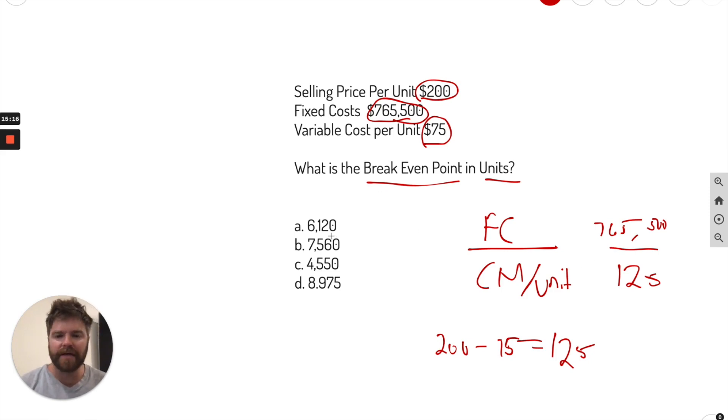And we got 6,124, which is, again, the closest number is 6,120. Let me just make sure I did that right. I had 765,500 divide it by 125. Yeah. So the closest answer is going to be 6,120. And that is your best option.